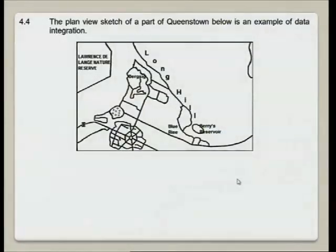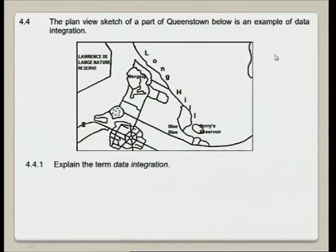The plan view of Queenstown is an example of data integration, and data integration is the concept for this question. Explain the term data integration. What is integration? Integration means to put two things together — to integrate it. We take data of different sets and integrate them: we put them together to create new information.